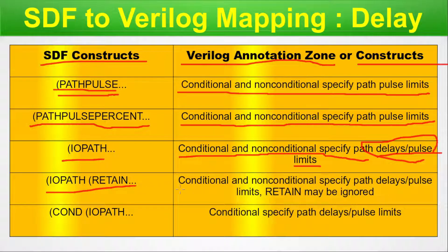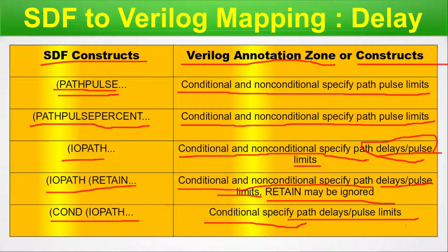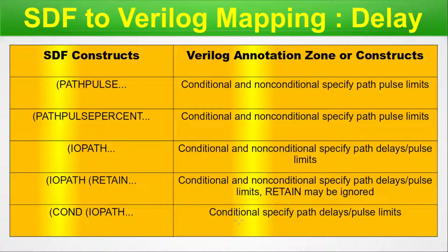IOPATH with RETAIN maps to conditional and non-conditional specified path delays and pulse limits; the RETAIN component may be ignored. COND with IOPATH maps to conditional specify path with delay and pulse limit. These are the straightforward mappings for that portion of the delay construct table.